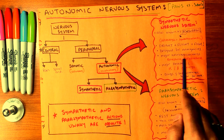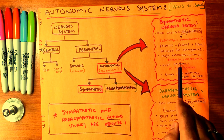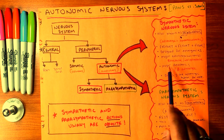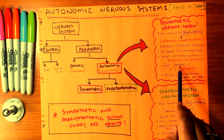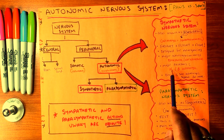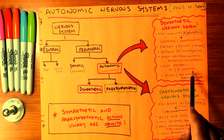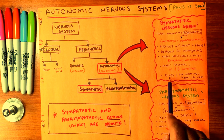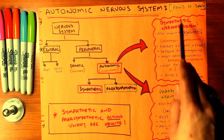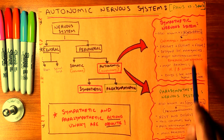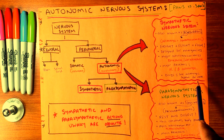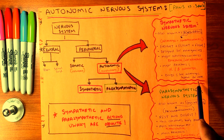The major neurotransmitters of the sympathetic nervous system are epinephrine and norepinephrine. The major receptors are alpha and beta adrenergic receptors. The drugs of this system are in the adrenergic system.